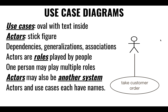Typically, use cases are documented as a stick figure representing a human actor and then an oval with a single title. Usually these titles are verb phrases that say what verb, who's acting, and what object is being acted upon — for example, 'take customer order'.